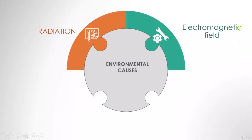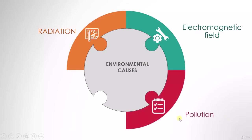The next environmental cause is an electromagnetic field. A very famous example is that when you travel in a flight, you are asked to switch off your mobile — that is done to avoid electromagnetic field interference. The third environmental cause is pollution: if there is a dust particle on a sensor, that could also result in an error.